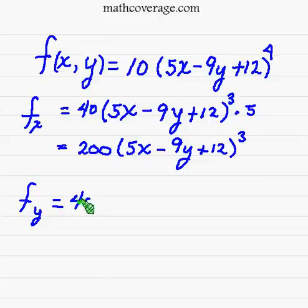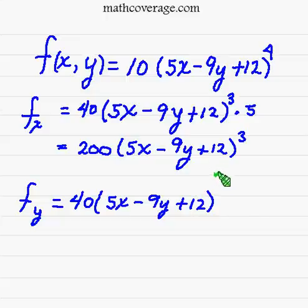We're rewriting everything in parentheses, 5x minus 9y plus 12, and subtracting 1 from the exponent leaves us with 3. Then taking the derivative of the inside, the derivative of 5x this time is 0 because x is a constant. The derivative of negative 9y is negative 9.